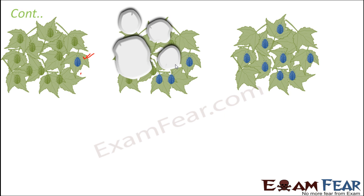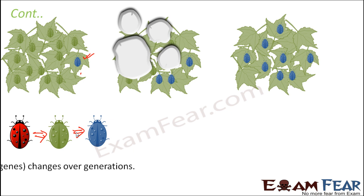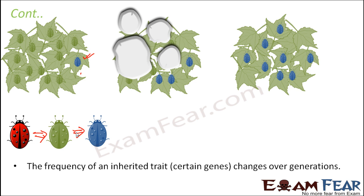Looking at the whole picture: initially the red beetle frequency was high, then the green beetle frequency was high, then the blue beetle frequency became high. The frequency of an inherited trait or gene can change over generations, but the total frequencies of alleles always remain constant. Whenever you see a deviation from Hardy-Weinberg equilibrium, that means evolution is taking place.